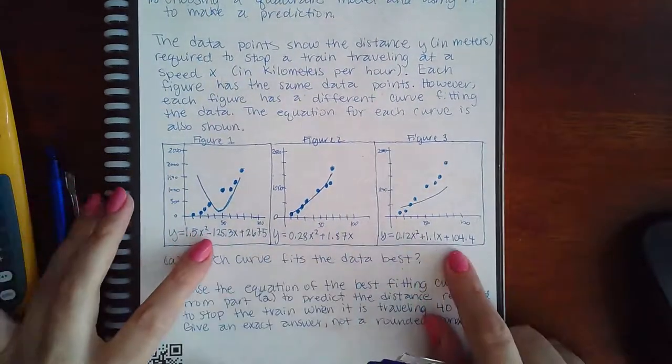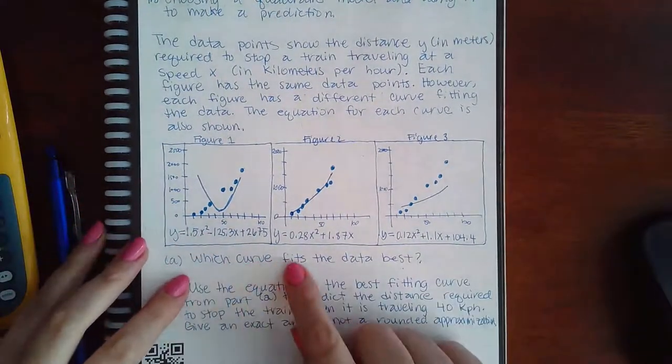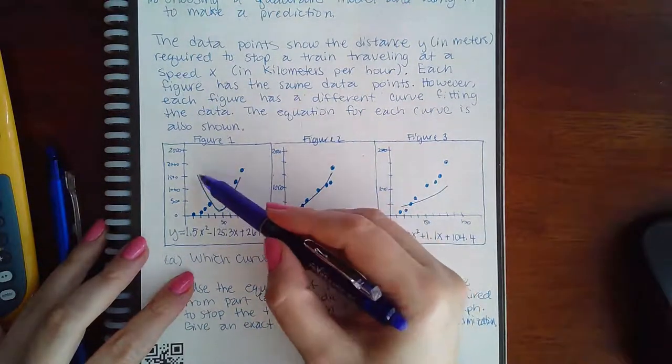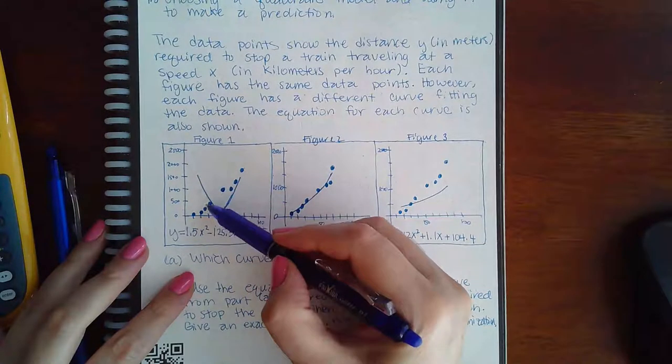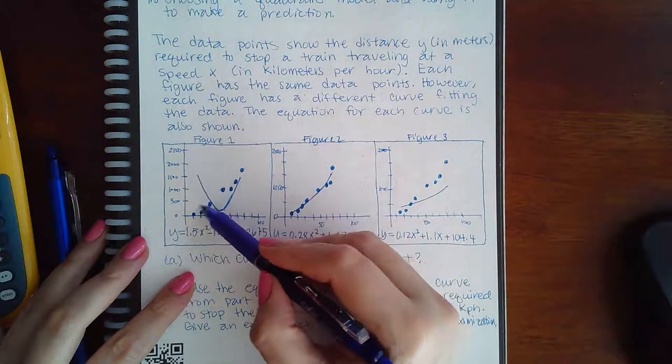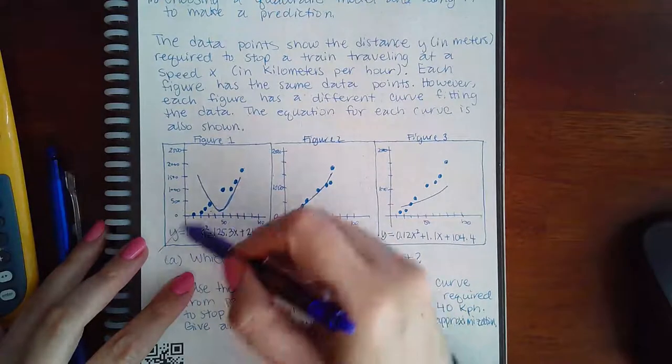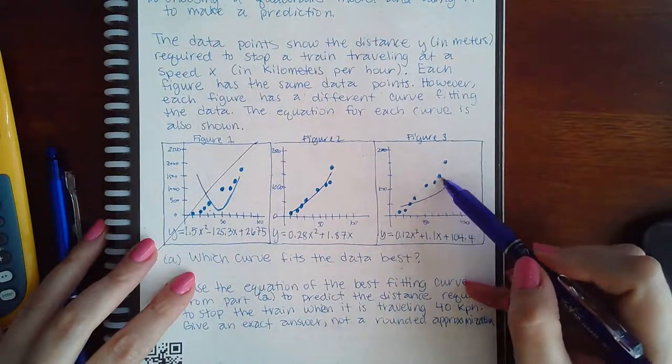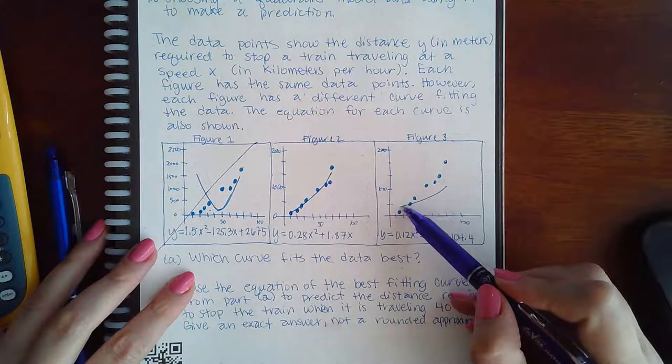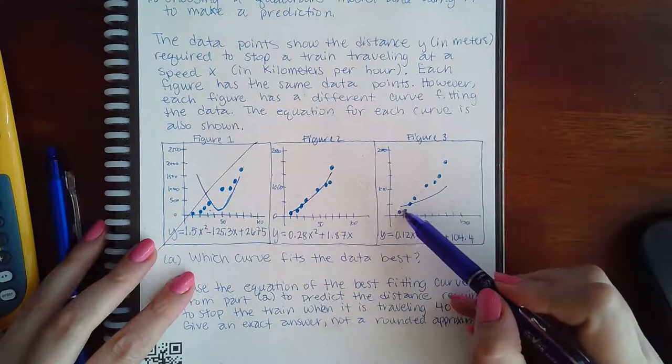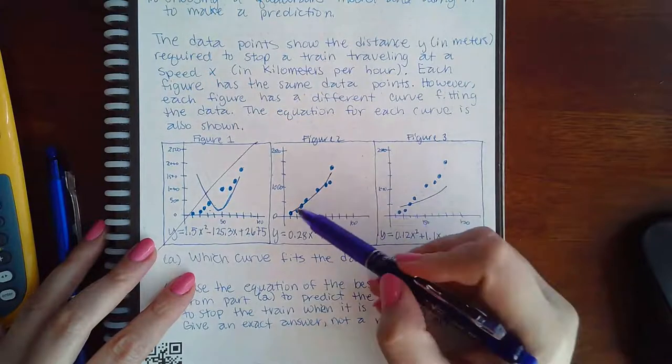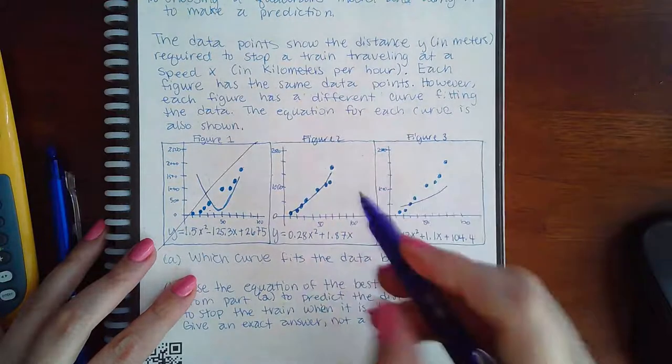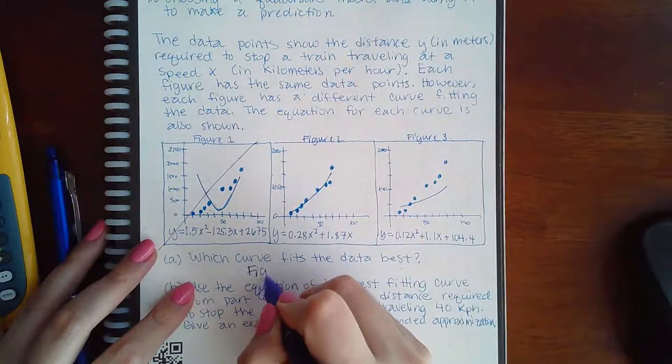Now it says which curve fits the data best. This one definitely doesn't fit it because you've got these high values here but low y values there. This one, the same thing. You've got all these values that are way up here but here the values are down here. This one, they're all pretty much really close to this figure, so figure 2 is going to be the best fitting curve.